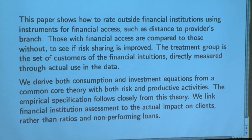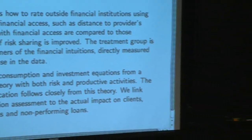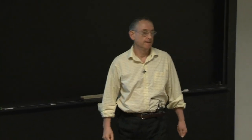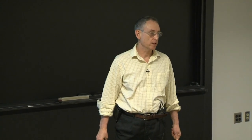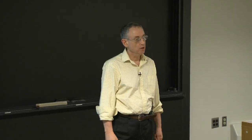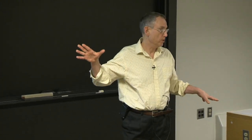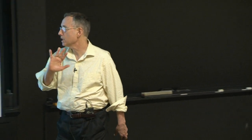So when we say those with financial access are compared to those without — that means those with access to the formal financial sector compared to those without. There's a money-lending sector too. It's going to turn out that being directly connected, at least in consumption, is helpful. But indirectly connected — through gifts and loans to someone in the village even though you're not a direct customer — is as effective in consumption smoothing. So that's consistent with the previous paper.